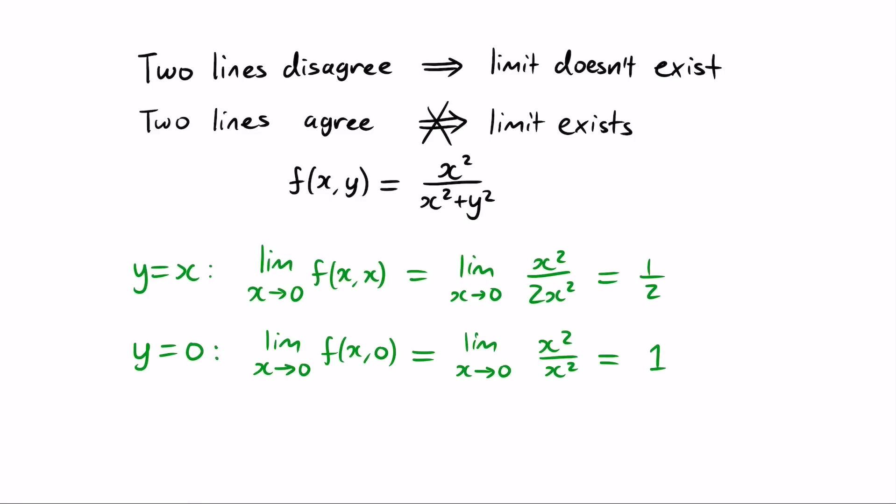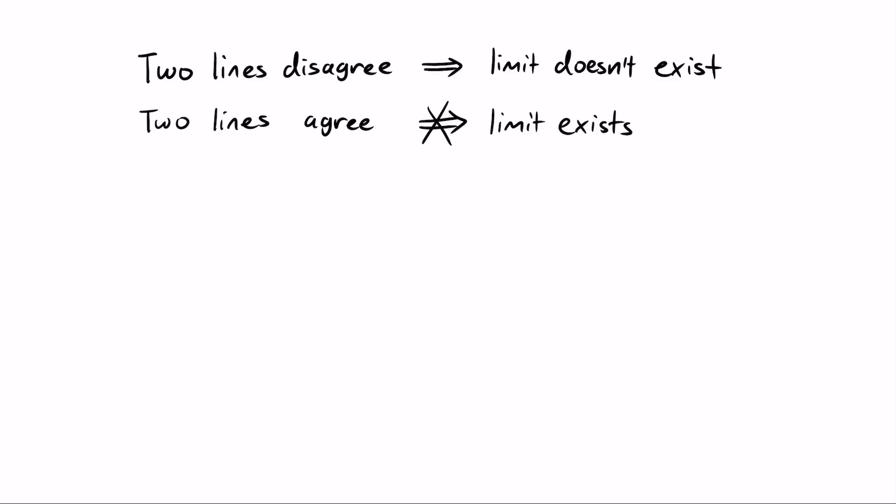Okay, so that's certainly a counter example, but it leads to an obvious follow-up question. If checking two lines is not enough, what if we check more? What if we check all the lines? We could write a straight line through 0 in the form y equals mx, where m is the slope. Is it enough to check the limit for every value of m? The answer is still no, and here is a counter example, y to the 4 over x squared plus y to the 4.